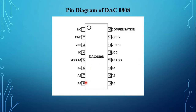The DAC 0808 series is an 8-bit monolithic digital to analog converter. The power supply current of the DAC 0808 series is independent of bit codes and exhibits constant device characteristics over the entire supply voltage range.